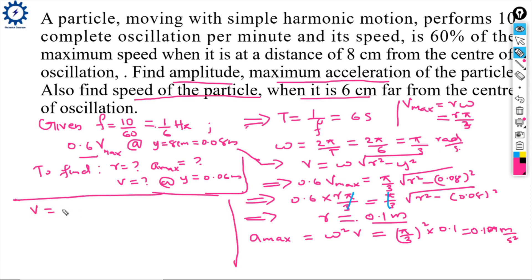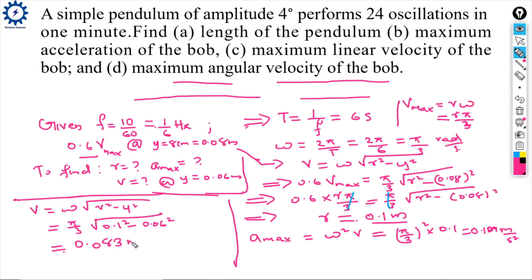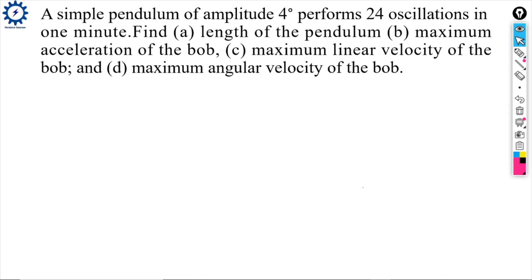For the speed at y = 6 cm: V = ω√(R² - y²) = (5/3)√(0.1² - 0.06²). The result is approximately V = 0.083 meters per second.